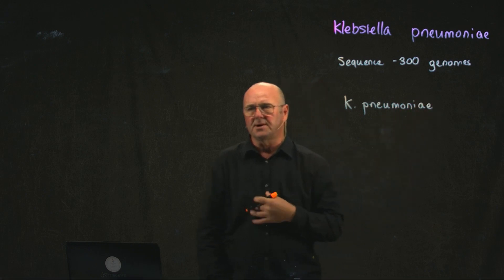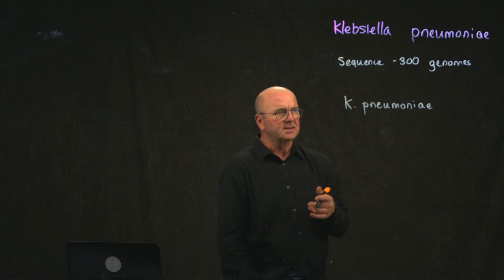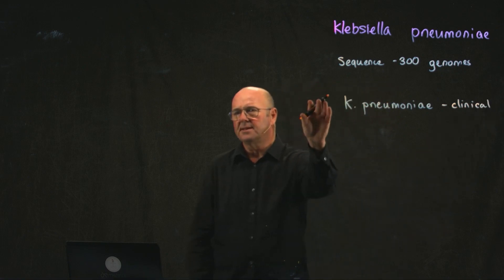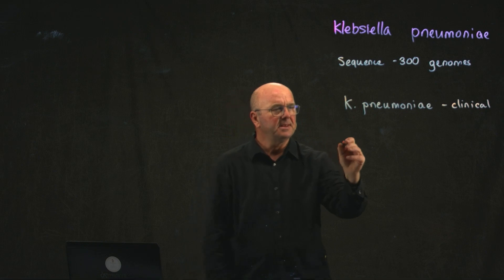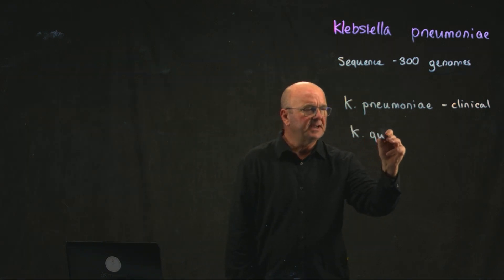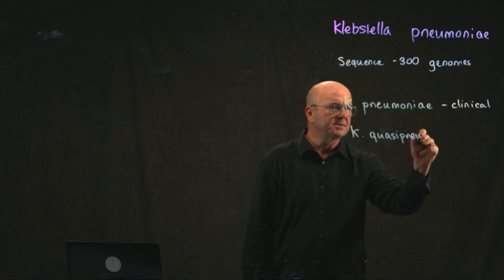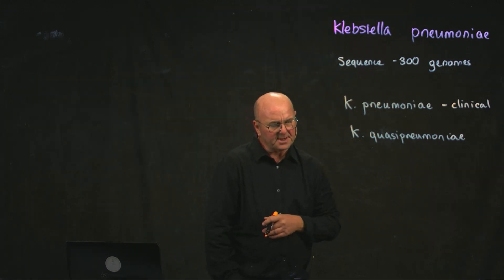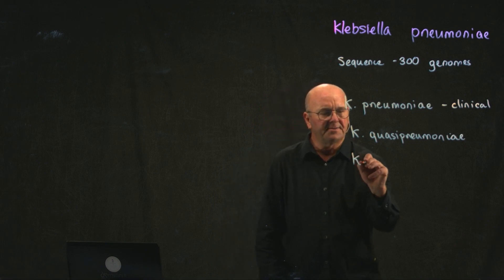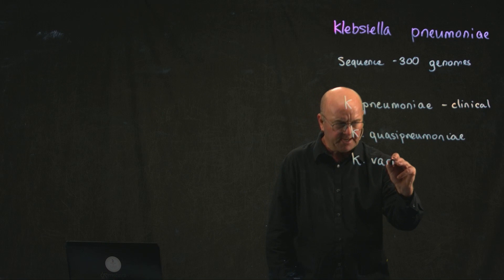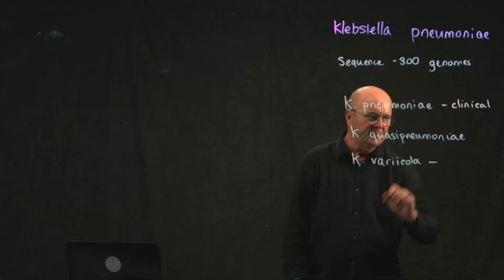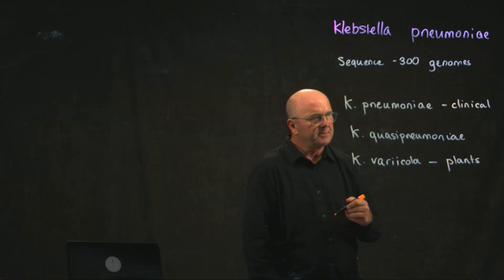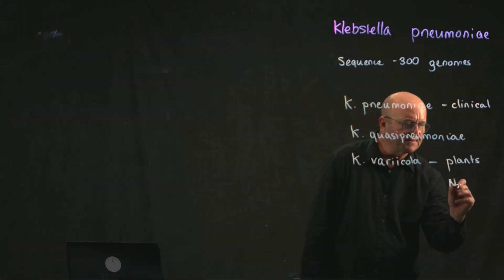What we all considered one big species was actually three. There was Klebsiella pneumoniae, which is basically all of the clinical isolates — the things that cause disease — and they were really closely related to each other. Then there was a related species that was slightly different but didn't really cause clinical disease, and they called that Klebsiella quasi-pneumoniae. And then a third species, which they've renamed Klebsiella varicola, which is associated with plants and is important from a biotechnological point of view because it can fix nitrogen.